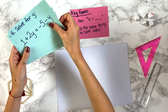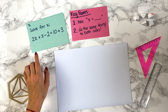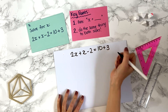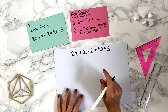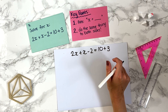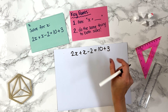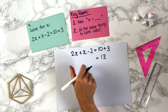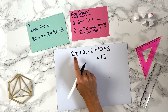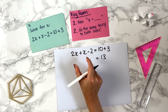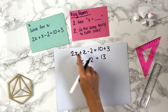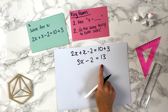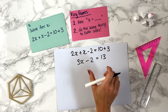Final question: solve for x, 2x plus x minus 2 equals 10 plus 3. The first thing to notice is we can combine some terms straight away. On the right, 10 plus 3 is 13. On the left, 2x plus x is 3x. So we can simplify this expression immediately — we're just rewriting it more neatly: 3x minus 2 equals 13. It's good to look for this kind of simplification before you begin.